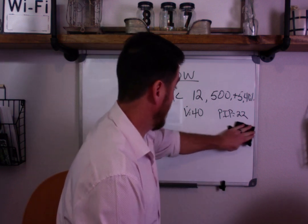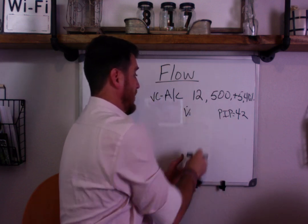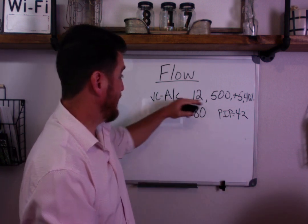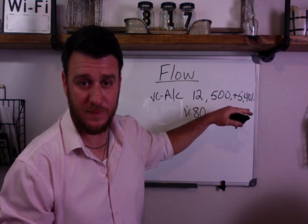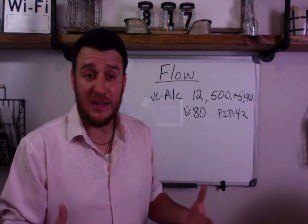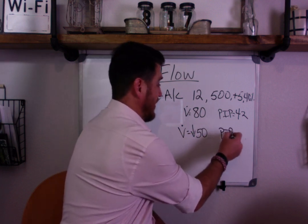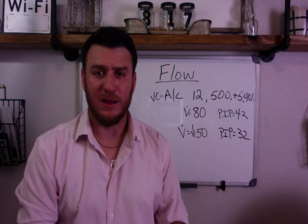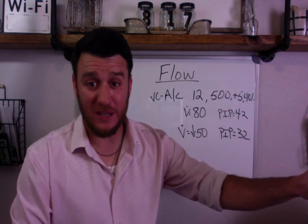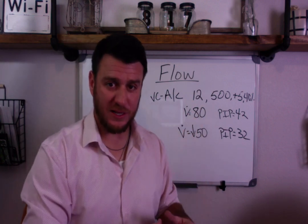Now let's change this up. What if your PIPs are 42 and you find your flow set on 80 liters per minute? If 500 is an appropriate tidal volume for your patient and you don't want to reduce tidal volume because you don't want to affect minute ventilation, what could you do to get your PIPs down? Take your flow and turn it down to 50 liters per minute and your PIPs will go down. The concept is: the higher the flow, the faster the gas, the higher the peak inspiratory pressure. The lower the flow, the lower your peak inspiratory pressures will be.